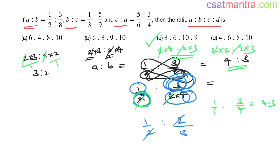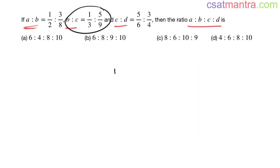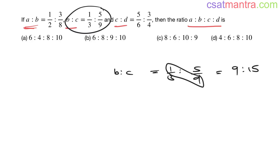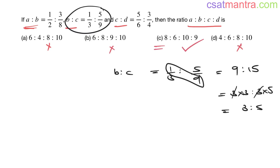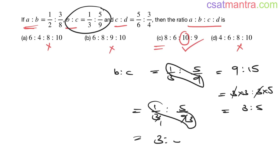Now take ratio b:c = 1/3 : 5/9. This gives 1×9 : 3×5 = 9:15. You can write it as 3×3 : 3×5 — 3 gets cancelled, giving 3:5. So c should be a multiple of 5. Here 10 is a multiple of 5. You can directly write 1×3 : 1×5 = 3:5.